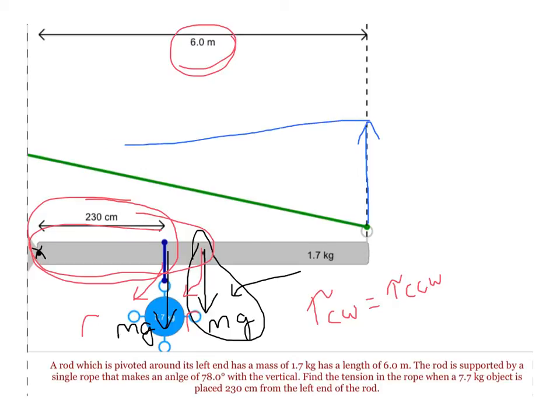Realize that the rope is pulling on an angle, so we need to break it up into two parts. A force tension in the y direction and a force tension in the x direction. The one that is providing the torque will be the y part.